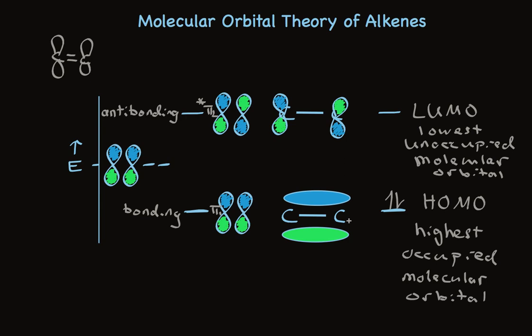So there we have it. A molecular orbital theory picture of alkenes. Next, we'll take a look at the picture of conjugated alkenes that molecular orbital theory gives us and learn from that what it can tell us about the behavior that otherwise we couldn't explain. Here we go!